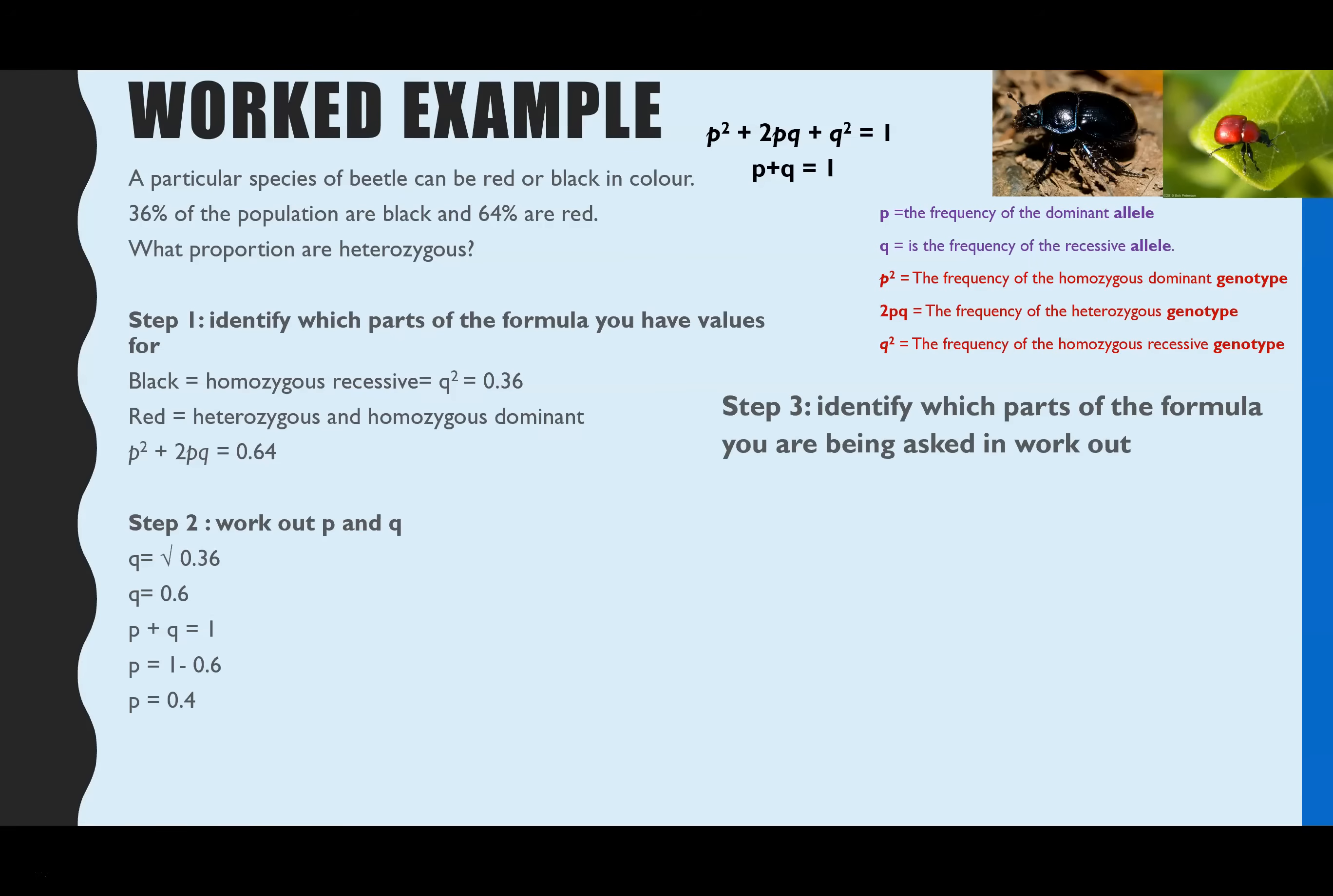Step three, we need to identify which parts of the formula we are being asked to work out. And this time, I've just said what proportion are heterozygous? So heterozygous is 2PQ, which actually is the same as the example we did previously.